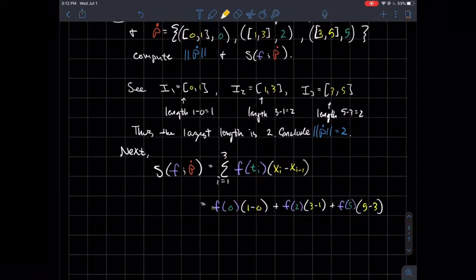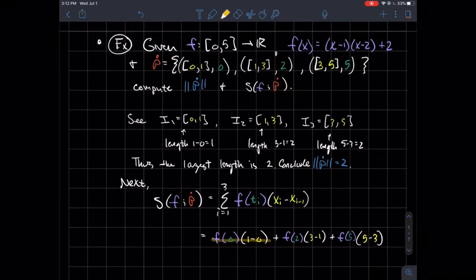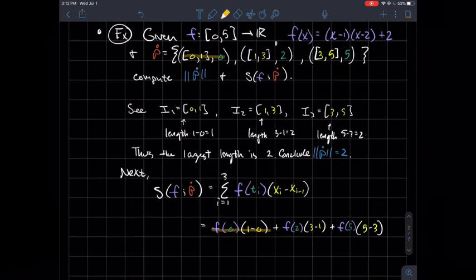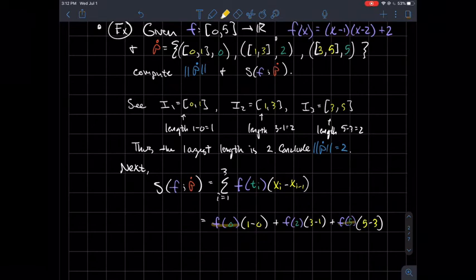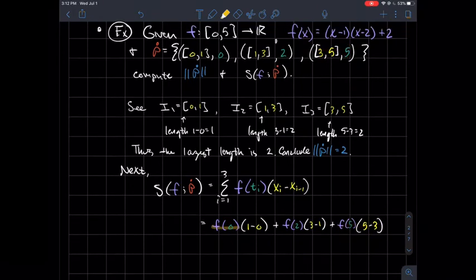Let's actually do them. The first one would be f(0), the first tag, times the width of the interval where that tag lived. So that's where I'm getting 1 minus 0, that's the width. Plus f(2) times 3 minus 1, right, that's the width. 3 minus 1 is the width of that subinterval, or the length—I say those a little bit interchangeably. And then finally, I should have f(5), that is the tag for this interval from 3 to 5, times the length there, so 5 minus 3.